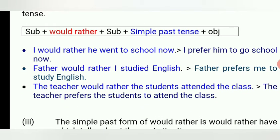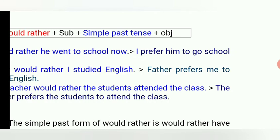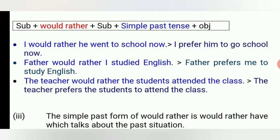The first example: 'I would rather he went to school now.' Actually, this sentence indicates the idea: I prefer him to go to school now. Second one: 'Father would rather I studied English.' Actually, Father prefers me to study English. And the third one: 'The teacher would rather the students attended the class.' The meaning of this sentence: the teacher prefers the students to attend the class.